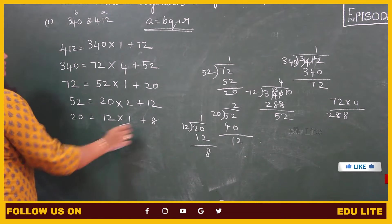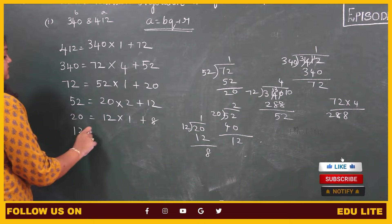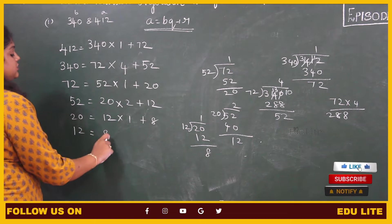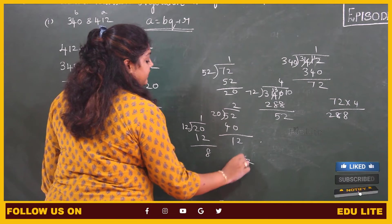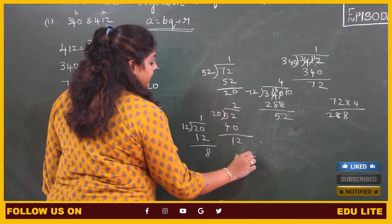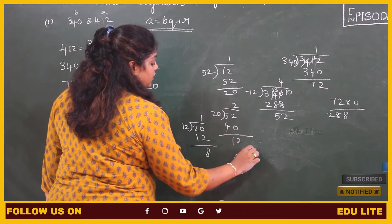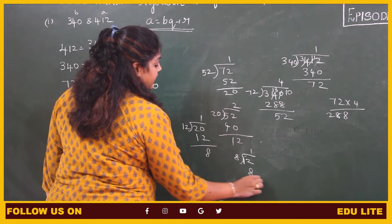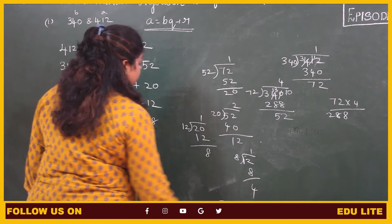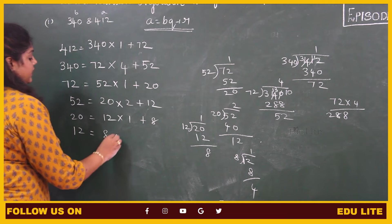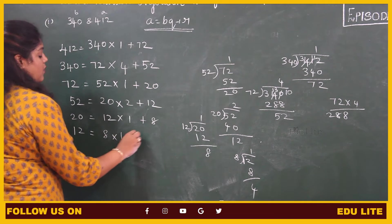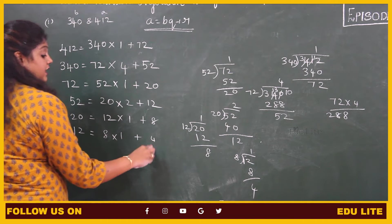Again it is not 0, therefore we have to proceed. 12 divided by 8: 1 times 8, remainder 4. So 8 into 1 plus 4.